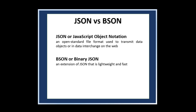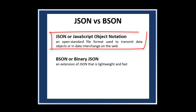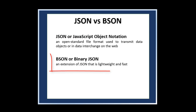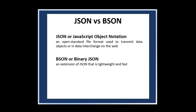Just to be clear, JSON or JavaScript Object Notation is an open standard file format used to transmit data objects in data interchange on the web. BSON, or Binary JSON, on the other hand, is an extension of JSON that is lightweight and fast. BSON is what we will use for our data interchange.